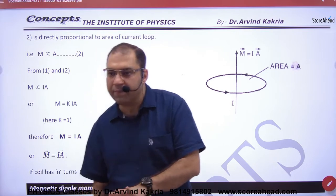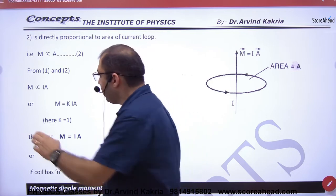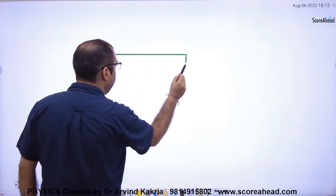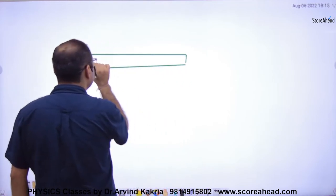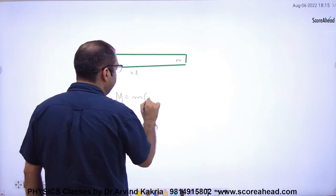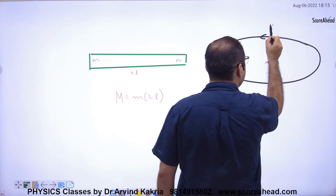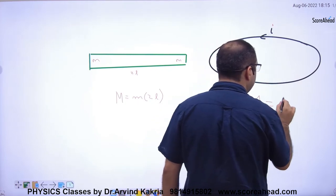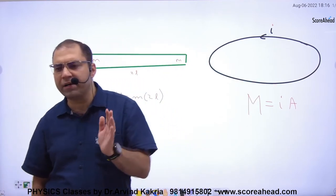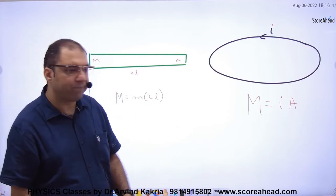Now there are two types of problems. Either you will be given a bar magnet — if it tells you the pole strength is small m and distance is 2l, then capital M equals small m into 2l. Or you will be given a current-carrying loop, where capital M equals current into area. The two formulas are different — decide which one to use based on whether it is a bar magnet or a current-carrying loop.